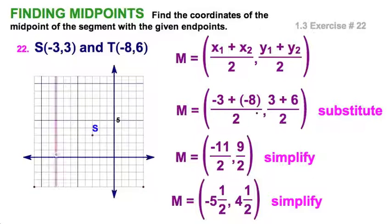For T, this is 5, 6, 7, 8, over 8, and then I'm going to go up 6. So when I plot that point right there, the segment ST would be there.